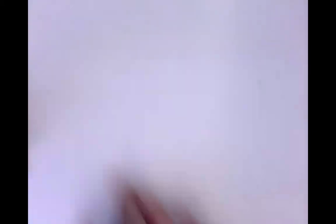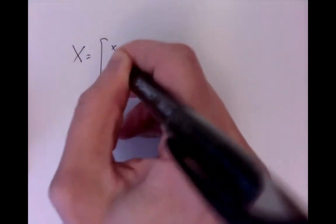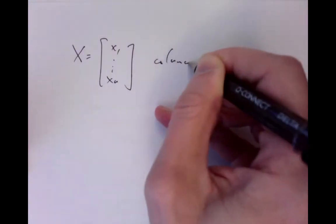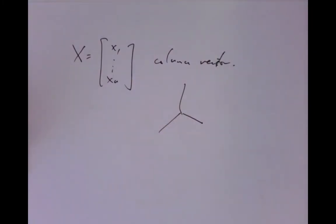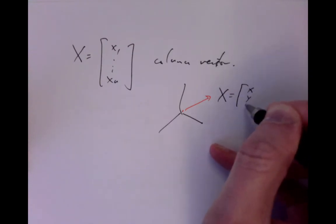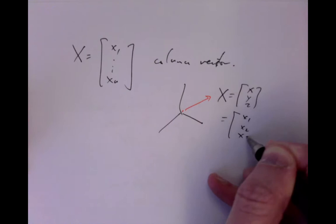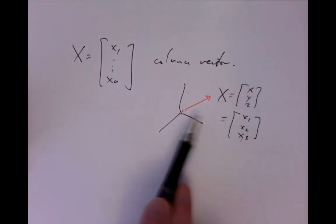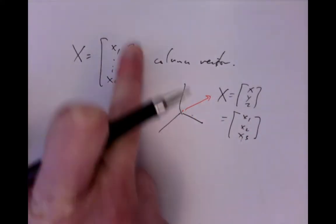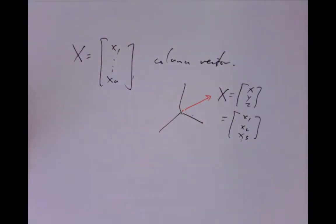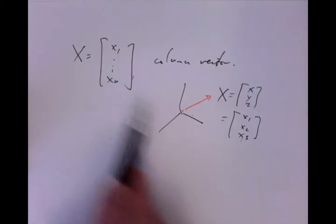Recall that we think of column vectors of the form x = [x1, ..., xn] as a geometric object. In our earlier description, for three-dimensional vectors, it was something like a little arrow in three-dimensional space with components x, y, z — in our current notation, x1, x2, x3. In n dimensions, we can't really draw the picture for n bigger than 3, but intuitively we think of it as something like that.